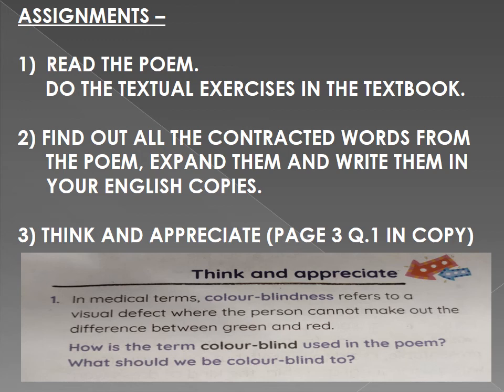In your book on page number 3, question number 1, under the heading 'Think and Appreciate,' please do this in your English copy. The question we have already discussed: in medical terms, color blindness refers to a visual defect where a person cannot make out the difference between green and red. How is the term 'colorblind' used in the poem? What should we be colorblind to? This is a very important question that carries the essence of the poetry itself, and I want you to write this in your copies.